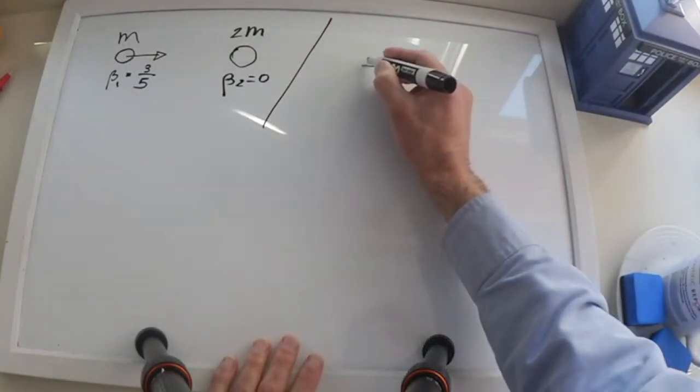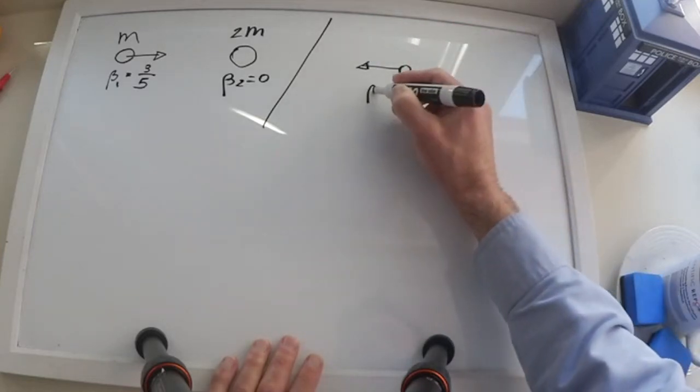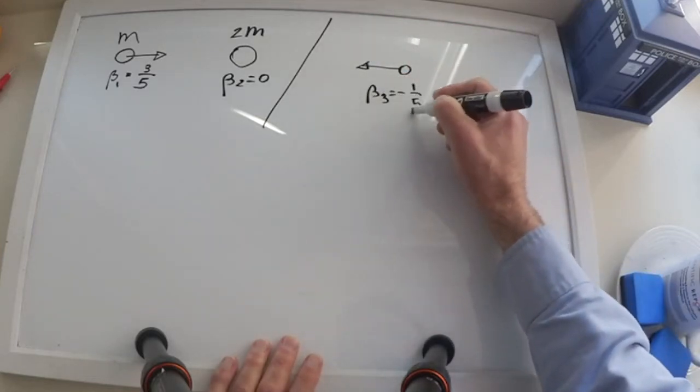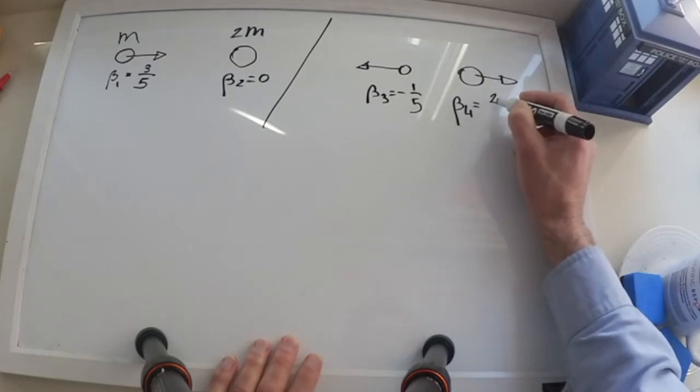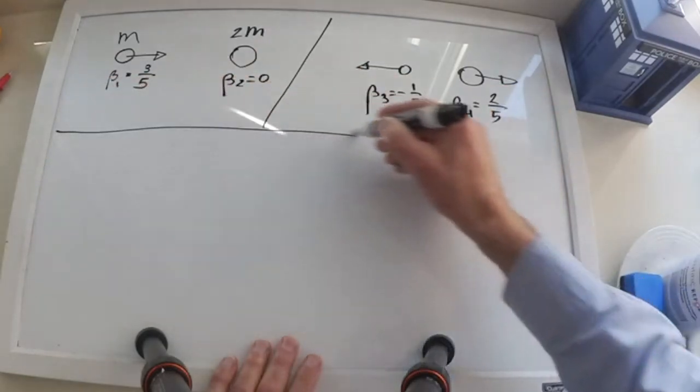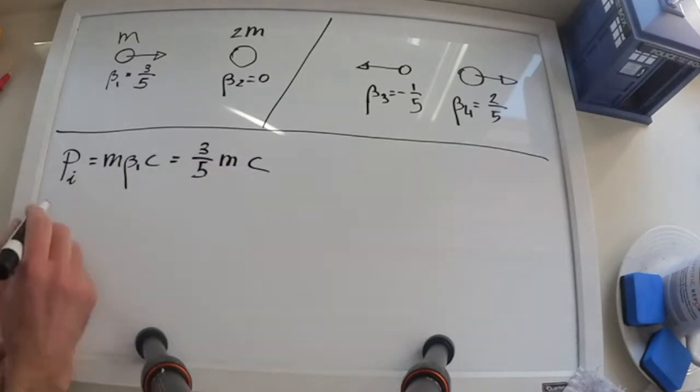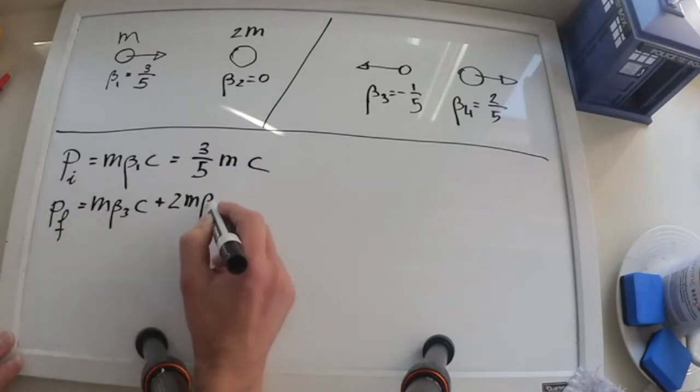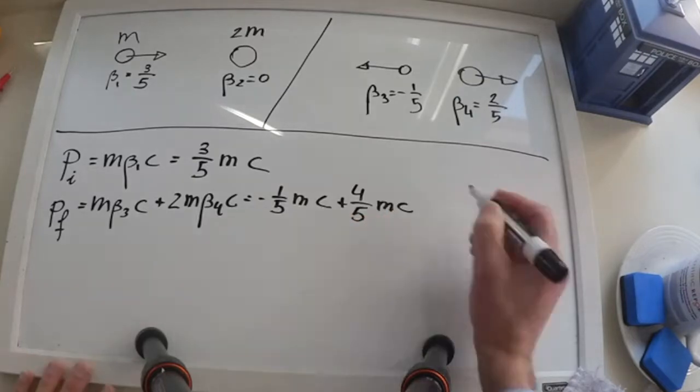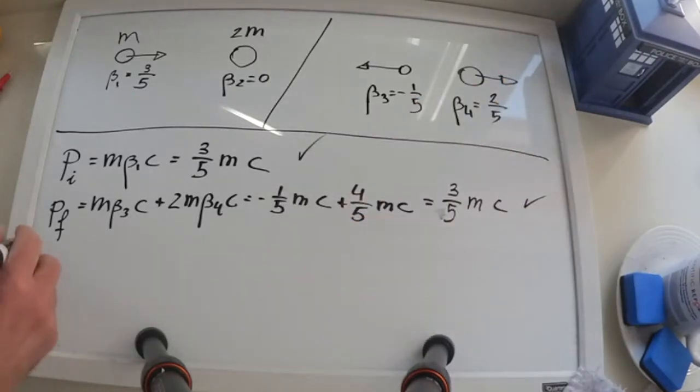We know from Newtonian physics that after the collision, particle 1 will bounce back with a beta of negative 1/5, while particle 2 will move forward with a beta of 2/5. The momentum before the collision is 3/5 mc. The momentum after the collision is minus 1/5 mc plus 4/5 mc, which is 3/5 mc. So momentum is conserved.